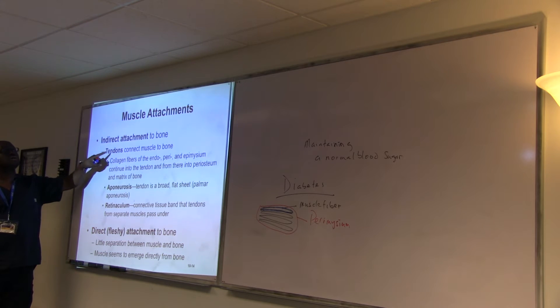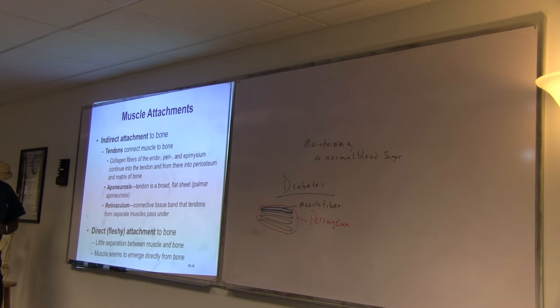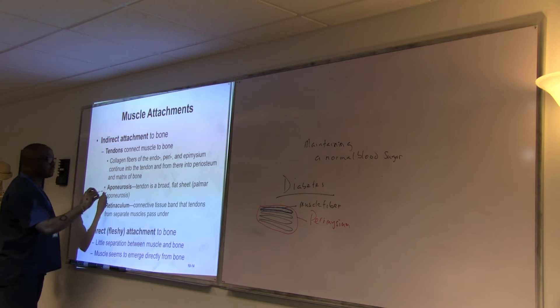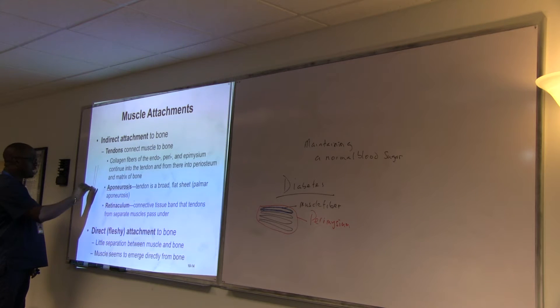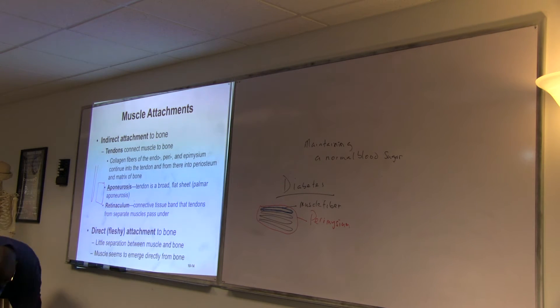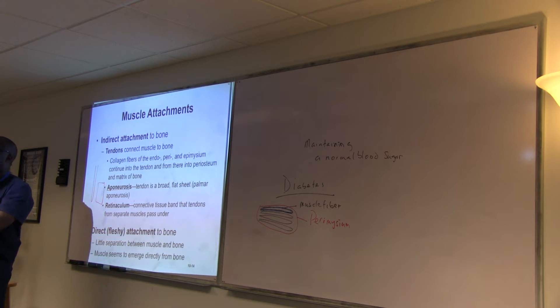So the indirect attachment to the bone is through the tendon, muscle to the bone, through the tendons. So we have another way through which they can also get attached. What we call aponeurosis. In this type of attachment, the tendon, instead of it being something like this, it's flat.